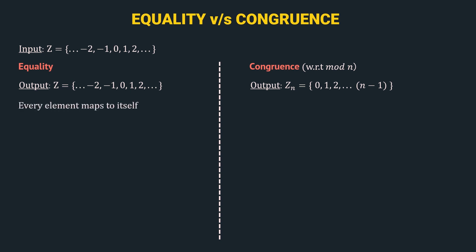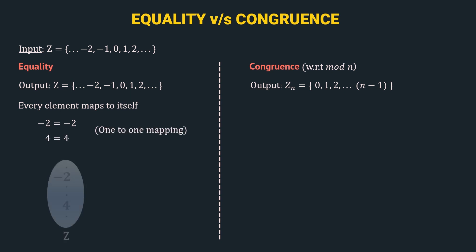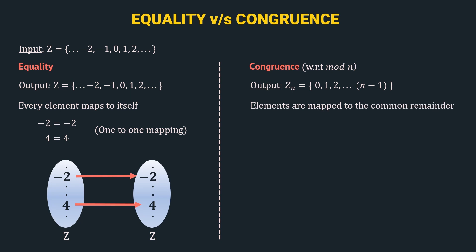In equality, every element is mapped to itself. Let's take some examples to understand this. So, minus 2 is equal to minus 2, and 4 is equal to 4. So, this is a 1-to-1 mapping. If this is the set representing the input Z, and this is the set representing the output, then it is 1-to-1 mapping — minus 2 is mapped to minus 2, 4 is mapped to 4. However, in the case of congruence, elements are mapped to the common remainder.